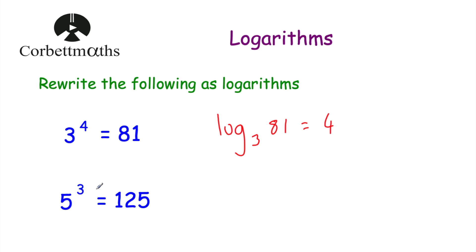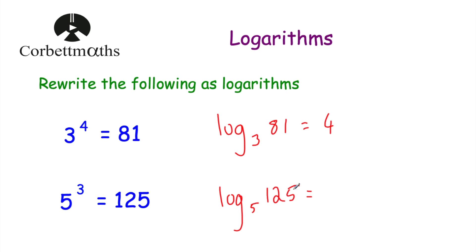Now we've got 5 cubed is equal to 125. If we wanted to write that as a logarithm, we'd write log to base 5 — because the base is 5 — of 125. What power would we raise 5 by to get to 125? The answer would be 3. So log to base 5 of 125 would be equal to 3. We've written these as logarithms.